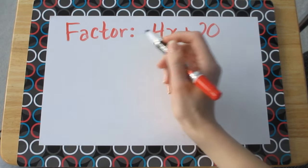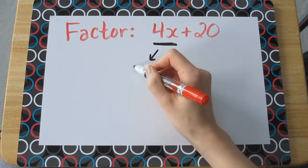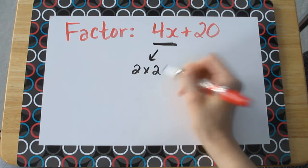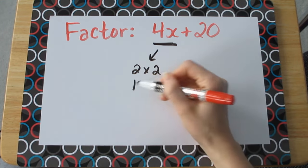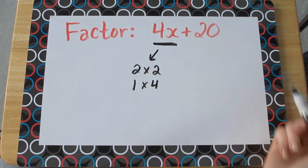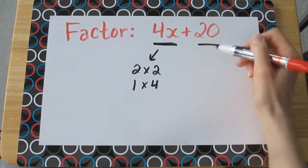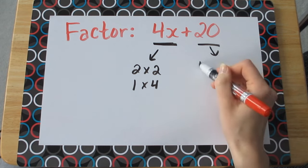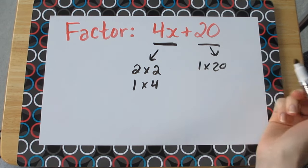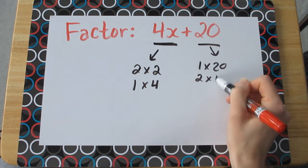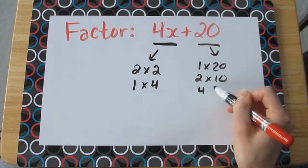So let's think of factors of 4. We know that 4 can be factored into 2 times 2. It also can be factored into 1 times 4. Let's take a look at 20 now. You can get an answer of 20 by multiplying together 1 times 20, 2 times 10, and 4 times 5.